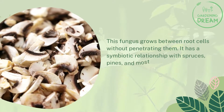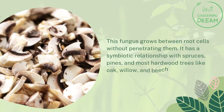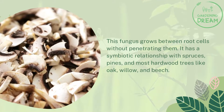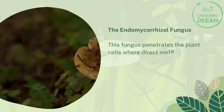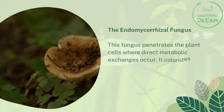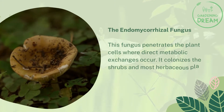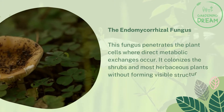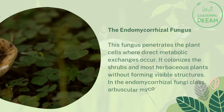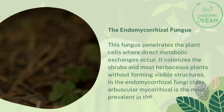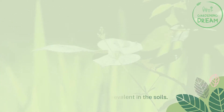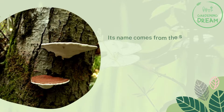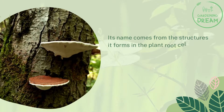Ectomycorrhizal fungi have a symbiotic relationship with spruces, pines, and most hardwood trees like oak, willow, and beech. The endomycorrhizal fungus penetrates the plant cells where direct metabolic exchanges occur. It colonizes shrubs and most herbaceous plants without forming visible structures. Within the endomycorrhizal fungi class, arbuscular mycorrhizal is the most prevalent in soils. Its name comes from the structures it forms in the plant root cell — the arbuscule.